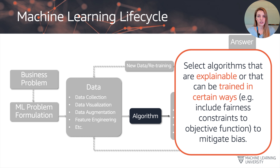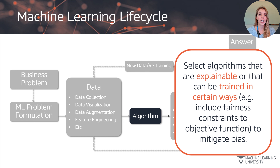Once we've dealt with the data itself, one important thing to do at the data stage is to measure the bias that is inherent in the data before it comes to training the model. At this point we can go ahead and select the algorithm. As we saw earlier, there are many different machine learning algorithms, varying by problem type. Some are intrinsically more explainable than others, and some can be trained and modified in certain ways — so what we ultimately want to do informs the choice of algorithm.